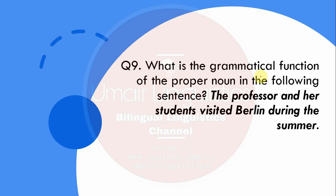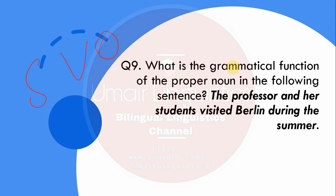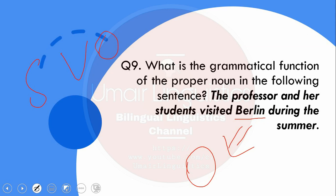Question 9: What is the grammatical function of the proper noun in the following sentence — 'The professor and her students visited Berlin during the summer'? The only proper noun is 'Berlin.' In terms of grammatical function (subject, verb, object), Berlin is acting as the object of the sentence. This can be confirmed by making it passive: 'Berlin was visited by the professor and her students.'